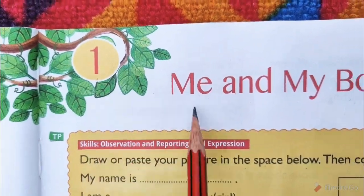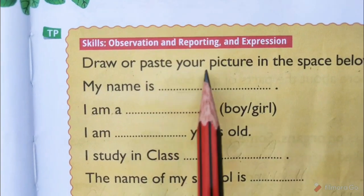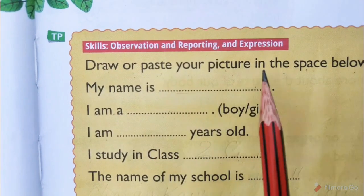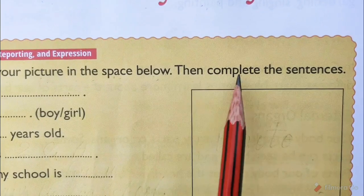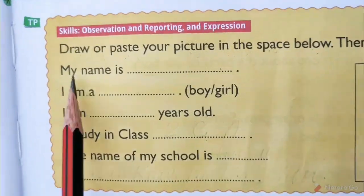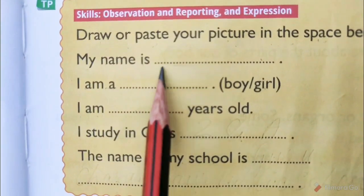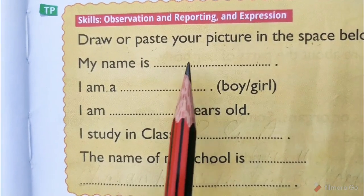Chapter 1: Me and my body. Draw or paste your picture in the space below. Then complete the sentences. My name is dash — write here your name.